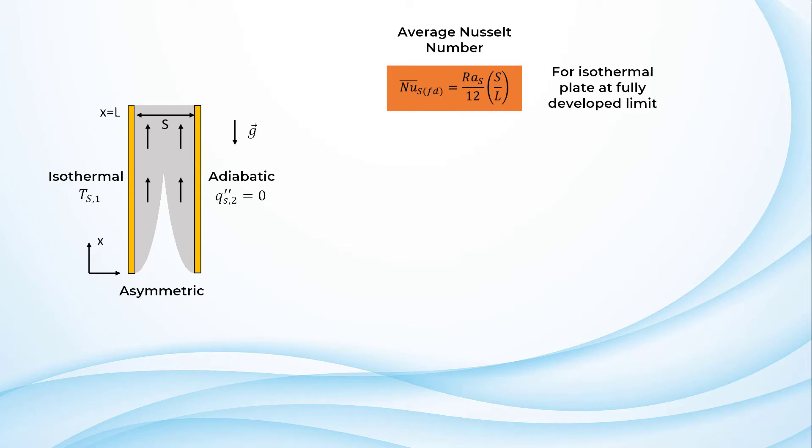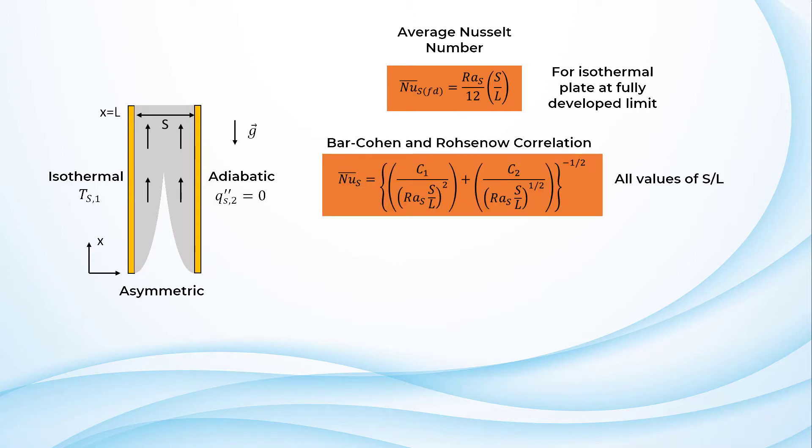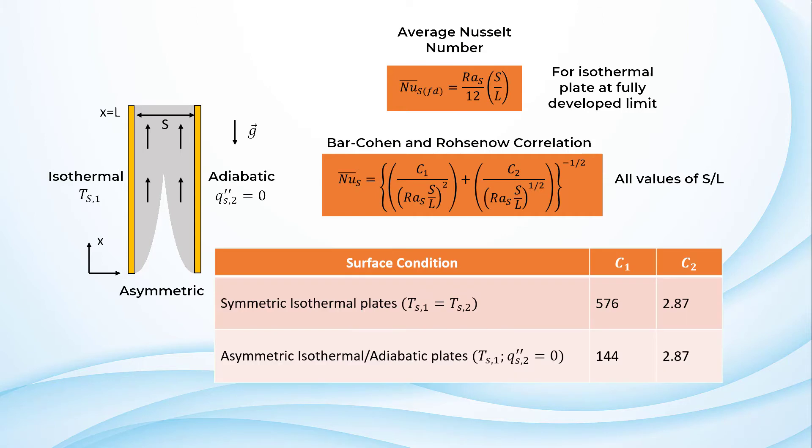Bar Cohen and Rohsenow obtained the following correlation which is valid for any value of S over L by combining the correlations for both the isolated plate and the fully developed limit. The values of the constants depend on the surface condition and are shown in this table. It can be inferred that the heat transfer from each of the plates reduces with increasing plate separation distance.